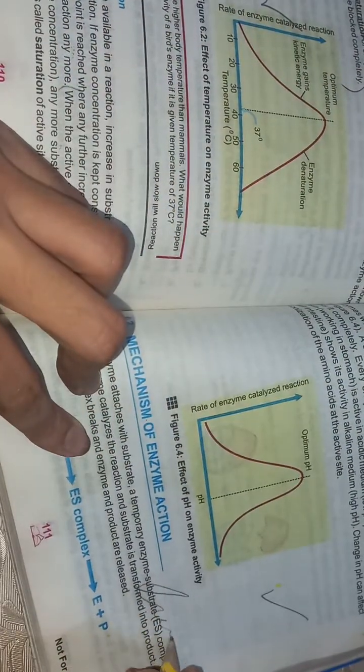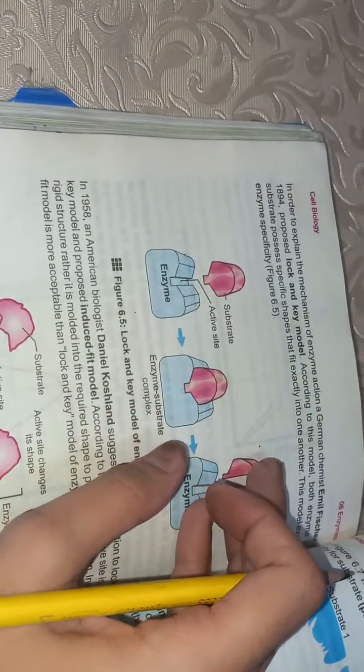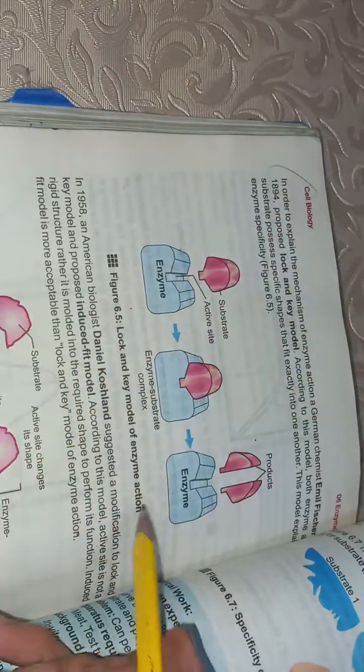Next most important long question: lock and key model. Lock and key model also comes in short and long questions. Short question from here to here, and long question also, both long and short.